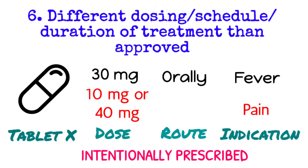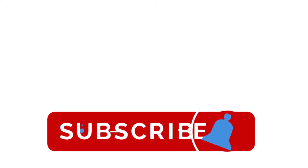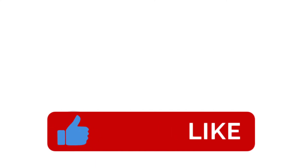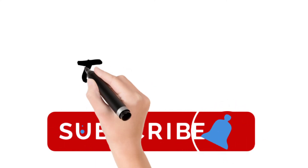I hope now you understand what is off-label use of drug. In simple language, it's intentional maladministration of drug. If you have any questions, please ask in the comment section below. If you found this information helpful, please like the video and subscribe to the channel. Thank you.